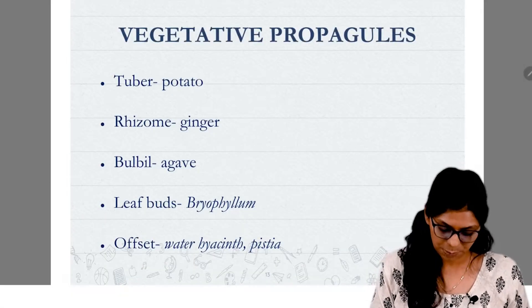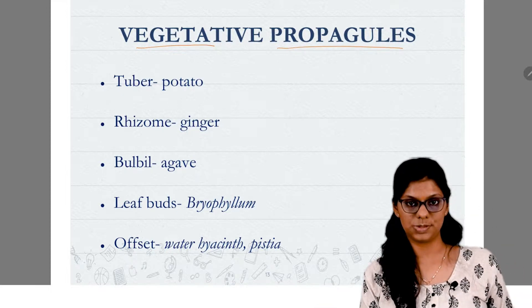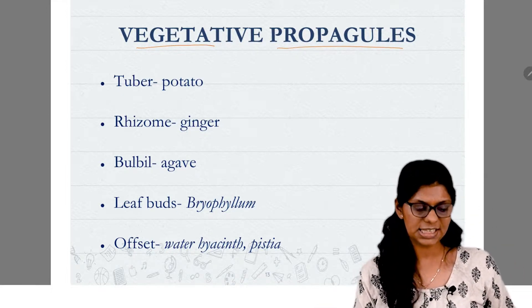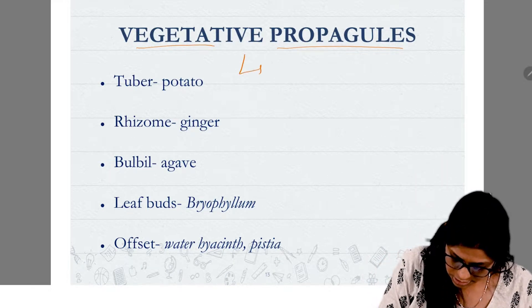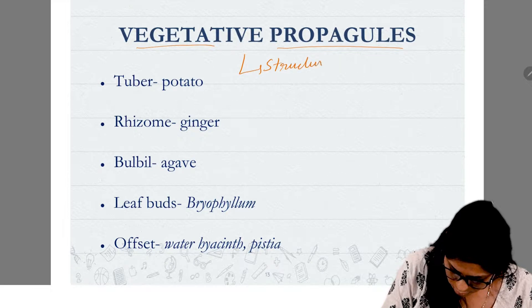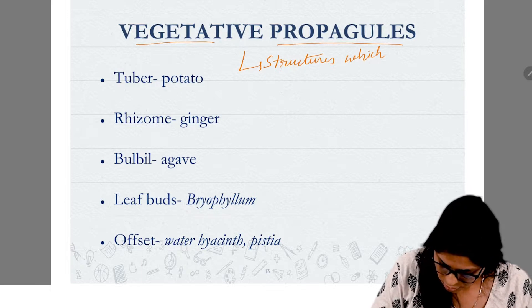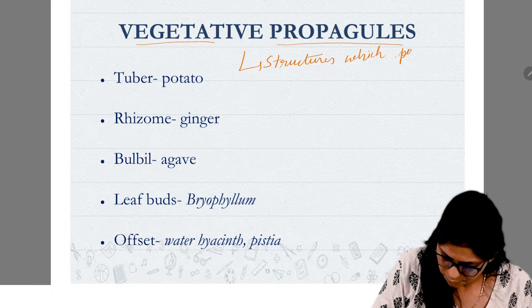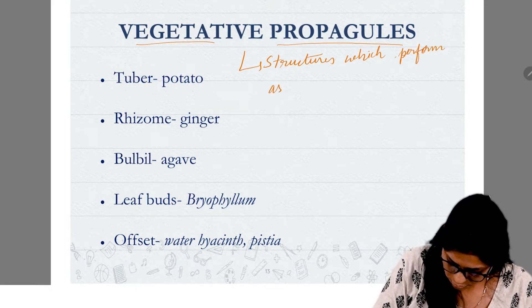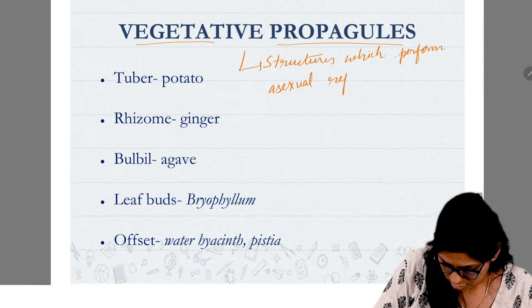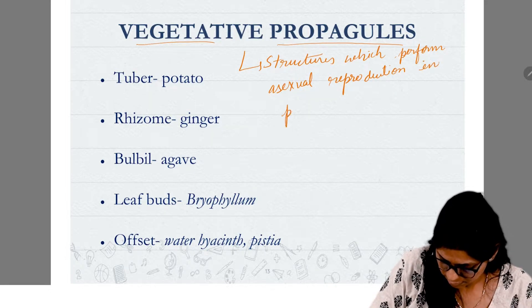Kids, now we will learn some structures — that is, vegetative propagules. What does vegetative propagules mean? These are structures which perform asexual reproduction in plants.